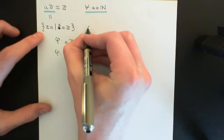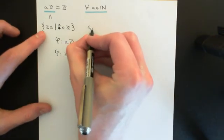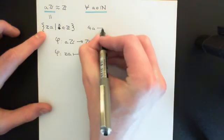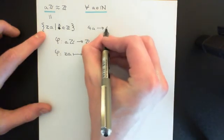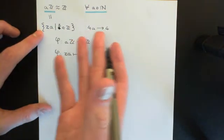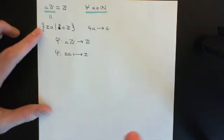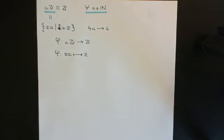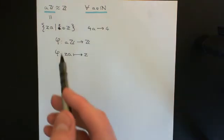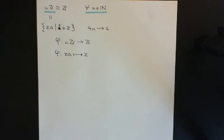For instance, if we have the element 4a, which is in aℤ, it will take it onto 4. If you have the element negative 2a, it will take it onto negative 2. So it just returns the integer that you multiplied by a to get the element.